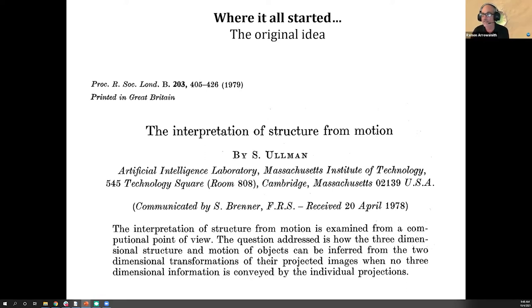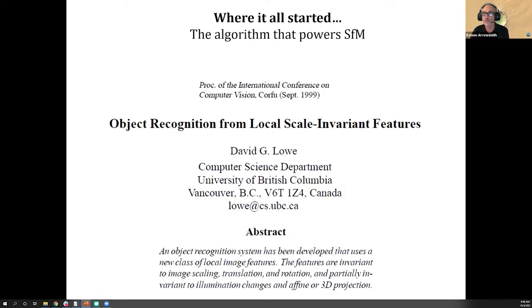Step two, the big breakthrough, came later - this is 1999, again from computer vision and computer science: the object recognition from local scale invariant features. An object recognition system has been developed that uses a new class of local image features. The features are invariant to image scaling, translation, rotation, and partially invariant to illumination changes or affine or 3D projection.